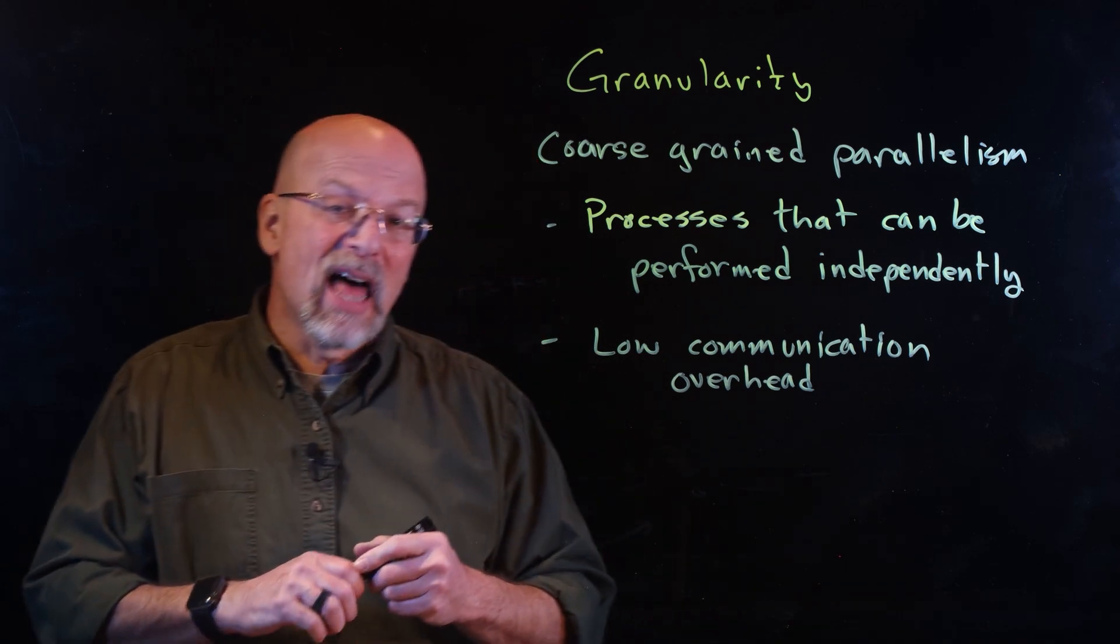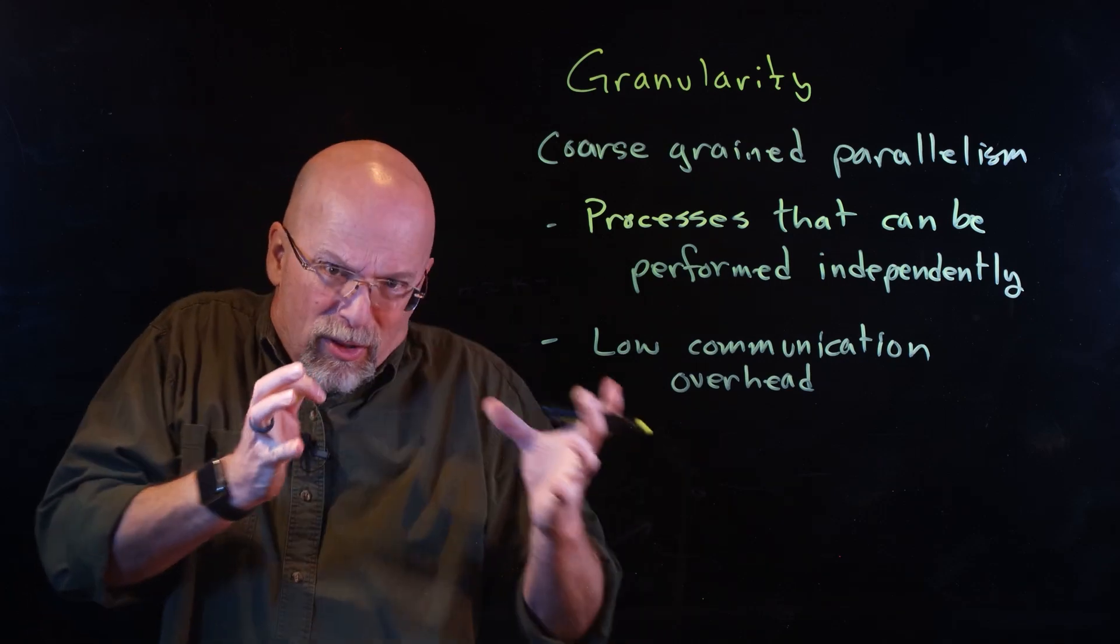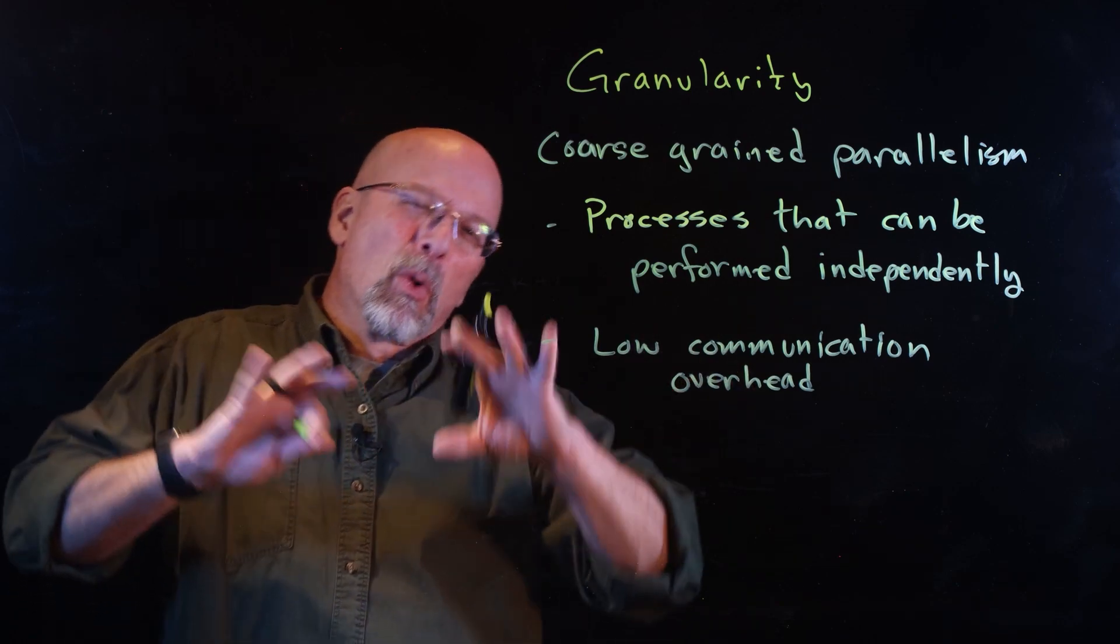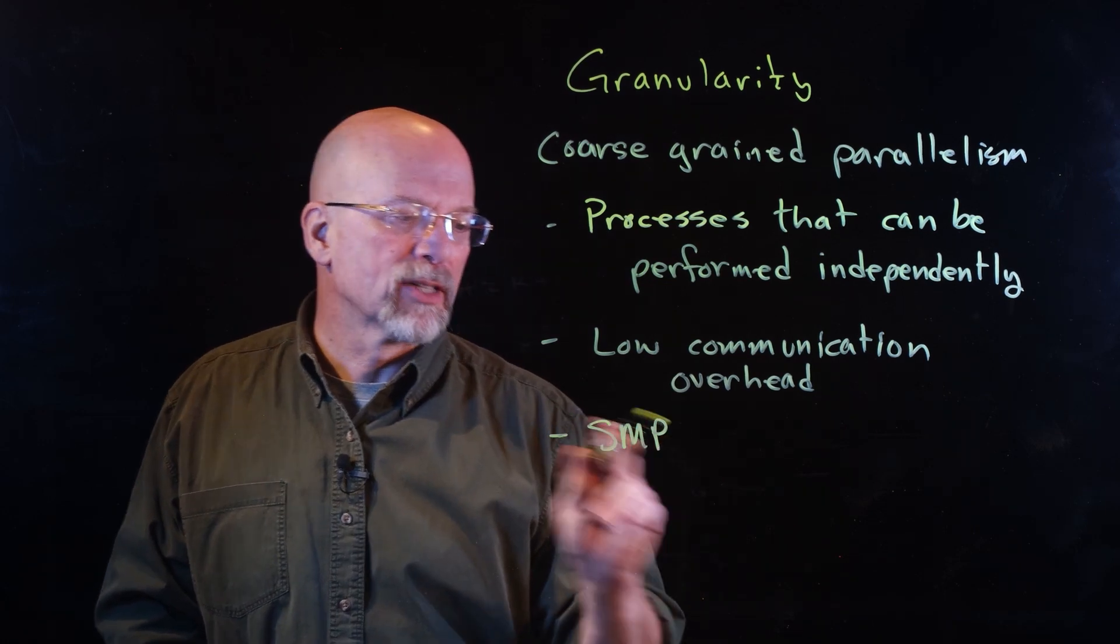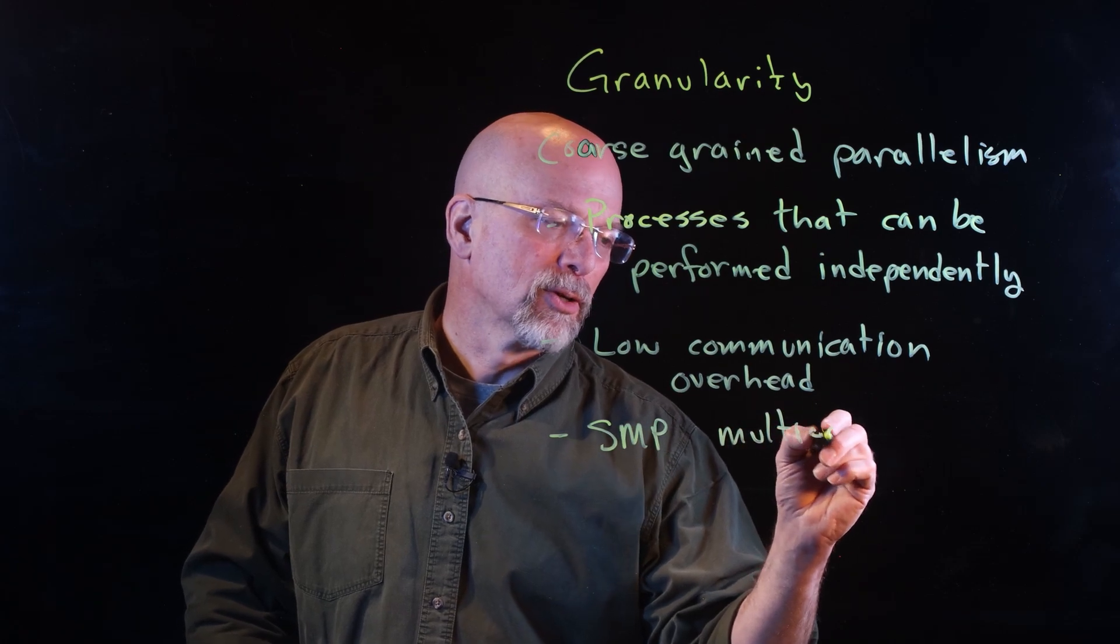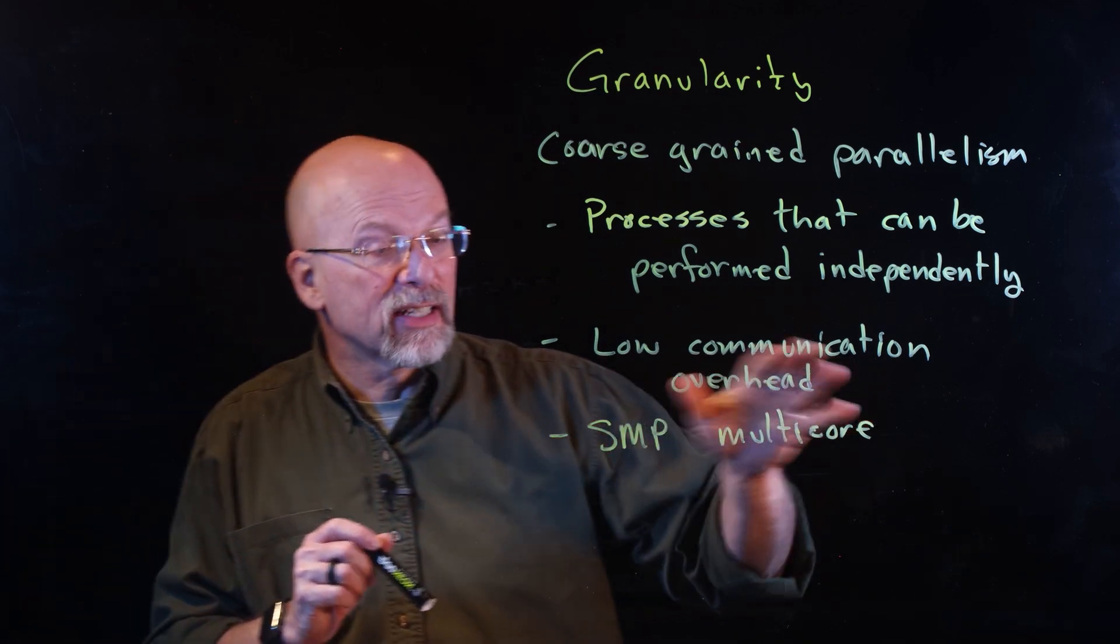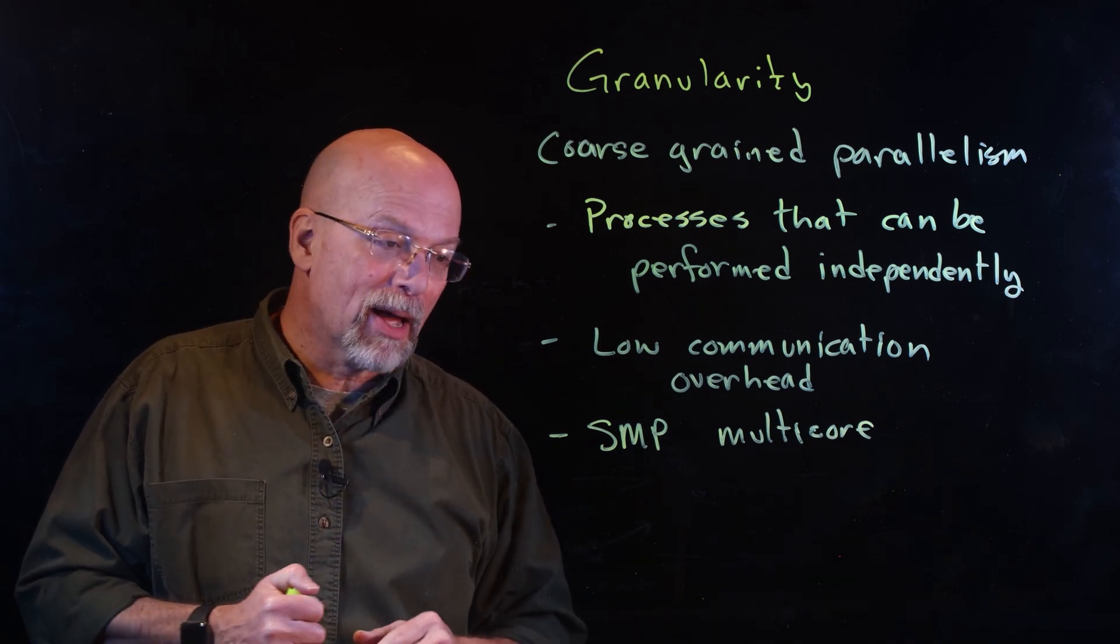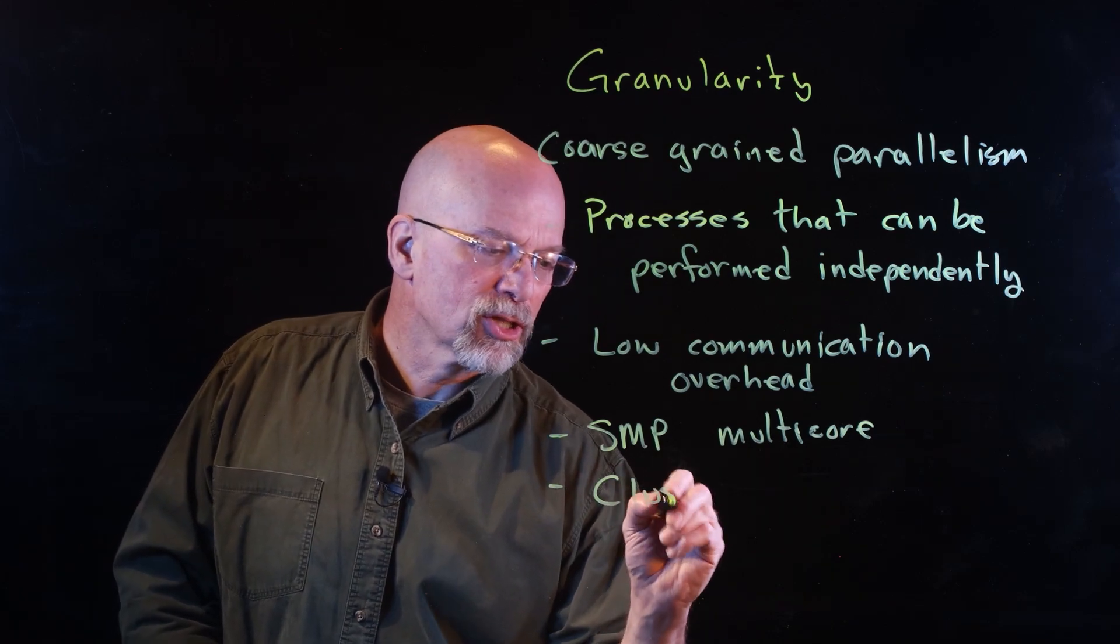It depends a lot on this idea of how far the processors are away from each other, whether they're really tightly grouped together, tightly connected, or whether they're more loosely connected. We've got something called symmetric multiprocessor. We'll go into that in the next lesson. This is basically your multi-core processor. You have the ability to share memory, so the effect of communication, it's not as bad, but there's still a problem.